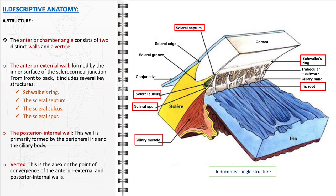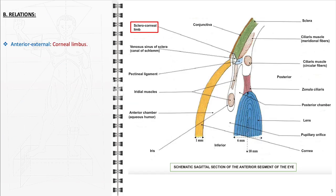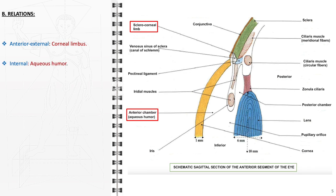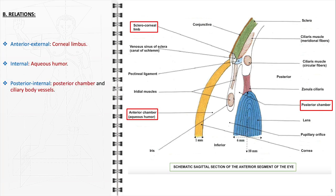The vertex determines the openness of the angle, affecting fluid drainage and intraocular pressure. In conditions like glaucoma, assessing the vertex's angle is crucial for diagnosis and management. The anatomical relationships of the anterior chamber angle include: anteriorly, the angle is related to the corneal limbus; internally, it is in relation to the aqueous humor; and posteriorly and internally, the angle is related to the posterior chamber and the ciliary body vessels.